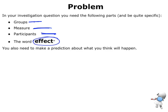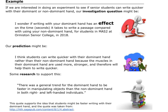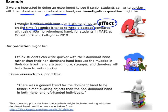I need to be talking about an effect, and thinking about what kind of prediction I would make. So let's look at an example. If I'm interested in looking at students to see whether they can write quicker with either their dominant or their non-dominant hand, here's what our investigation question might look like: 'I wonder if writing with your dominant hand has an effect on the time it takes to write a passage.' I'm going to compare writing with your dominant hand with your non-dominant hand, and I've been quite specific that it's for students in MAS2 or OSC in 2018.